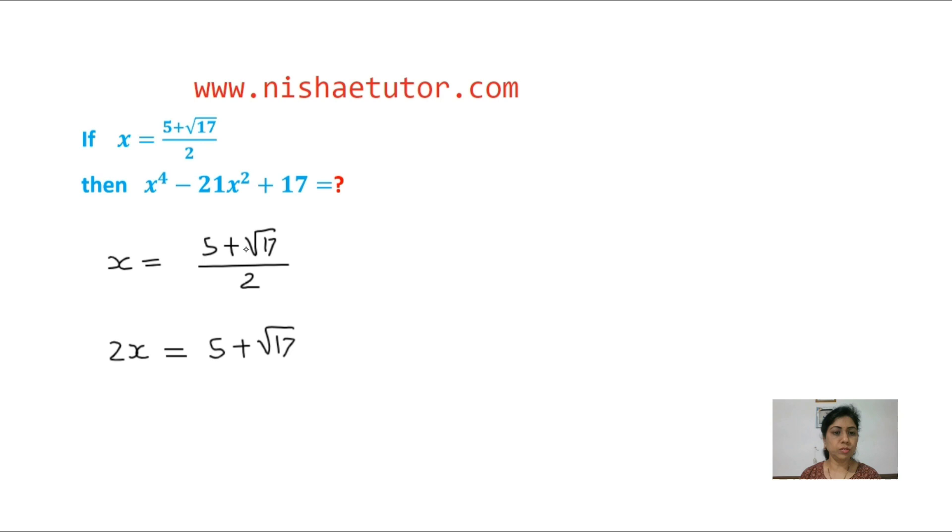And do you know whenever given radicals, we make isolate. Here both sides subtract 5. So 2x minus 5 equals square root 17.